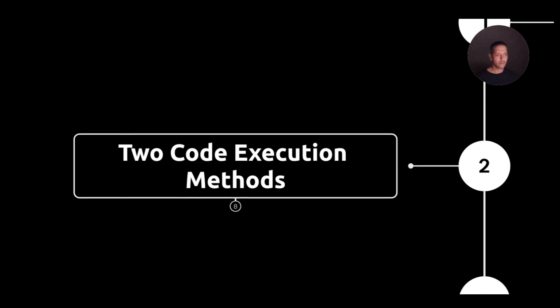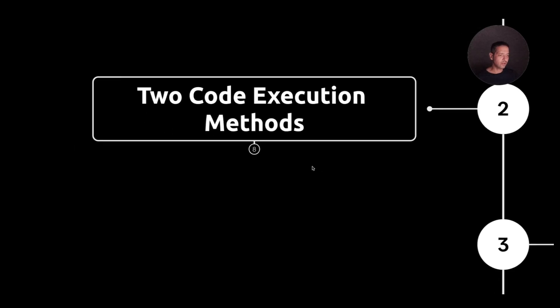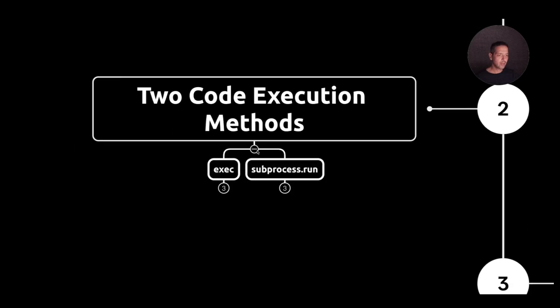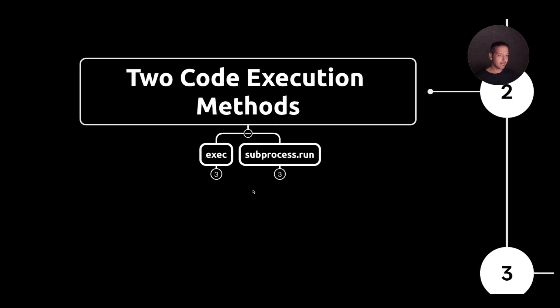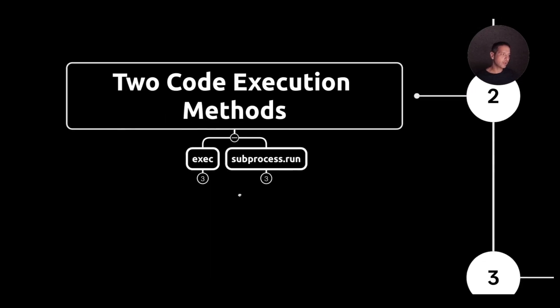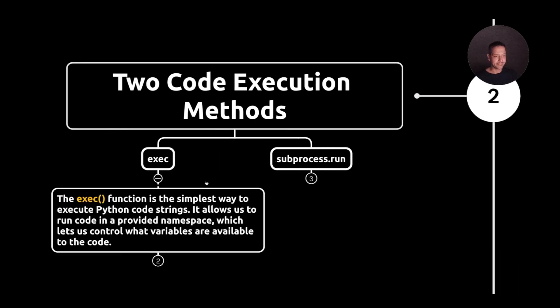Let's have a look at the two core methods of executing Python with agents. One is using the built-in exec method and the other is using subprocess.run. Let's start with exec.